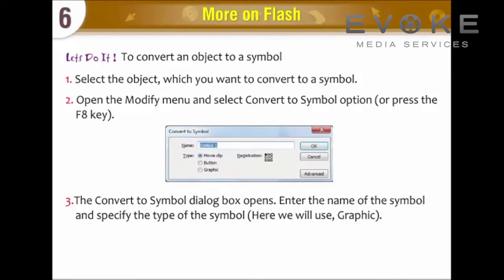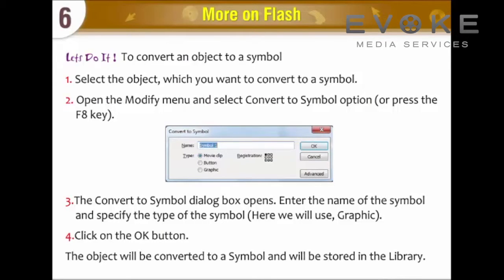The Convert to Symbol dialog box opens. Enter the name of the symbol and specify the type of the symbol. Here we will use Graphic. Click on the OK button. The object will be converted to a symbol and will be stored in the library.